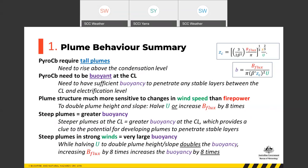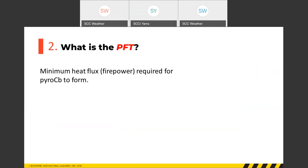That ends the first part of the presentation. The second part describes the PFT itself — the minimum heat flux, fire power, or buoyancy flux required for Pyro CB to form. These are all approximately proportional to one another, and obviously the threshold varies with the atmospheric environment.